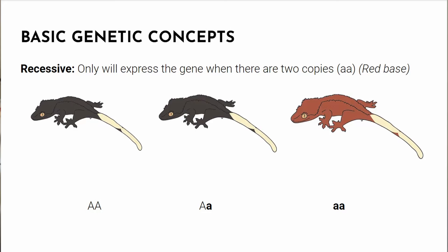When looking at a recessive mutation, big A/big A would not carry the gene, big A/small a would carry the gene but not express it, and small a/small a would express the gene and carry it. For recessive genes, you need to carry both copies to express it, but only one copy to pass it on without expressing.